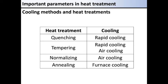The important parameter in heat treatment is the cooling rate. The cooling rate determines the microstructure of the metal at room temperature. Heating is generally done slowly, while in high-frequency quenching on a local surface of a material, the heating should be rapid.